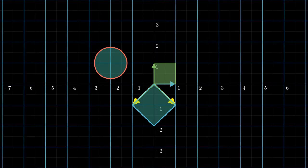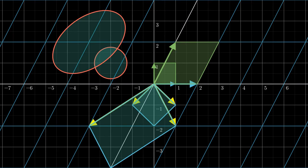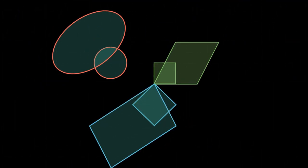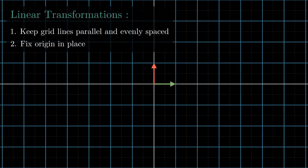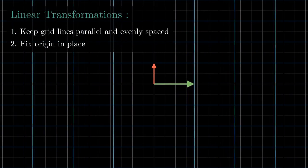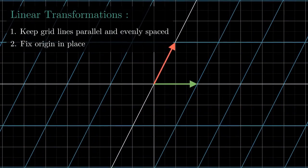A key feature of any linear transformation is that it scales areas evenly throughout the space, which is to say that whatever happens to that unit area during the transformation happens to any other area, irrespective of its shape and size. This follows from the inherent properties of linear transformations that keep grid lines parallel and evenly spaced while fixing the origin in place.